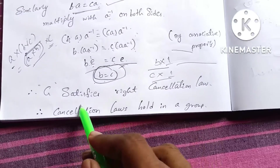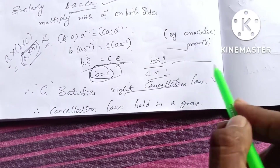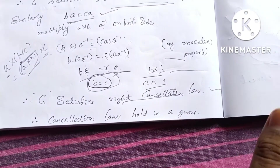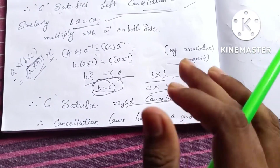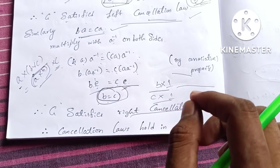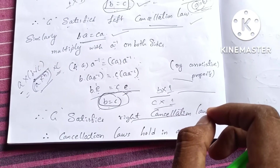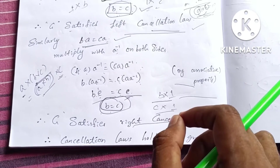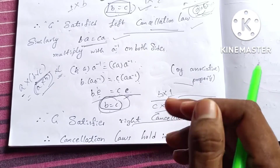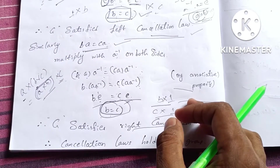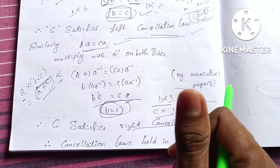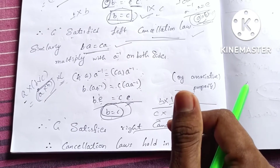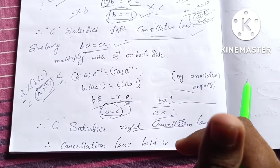Therefore, G satisfies the right cancellation law. Therefore, cancellation laws hold in a group. So this is the solution. If you have any doubt, please comment below. If you like the video, please like, share, and support the channel. Thank you.